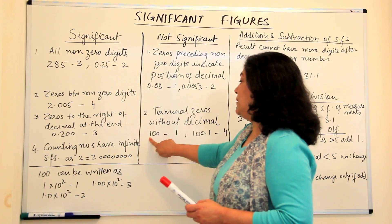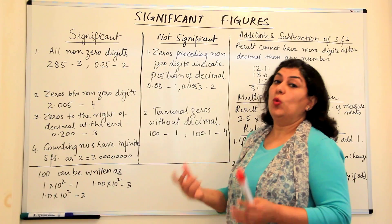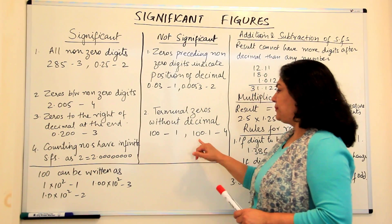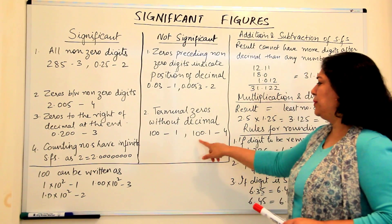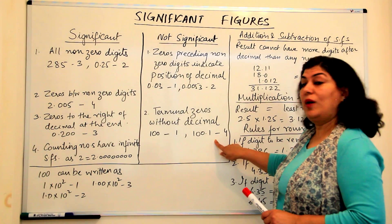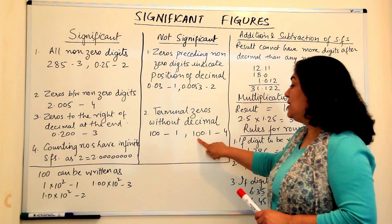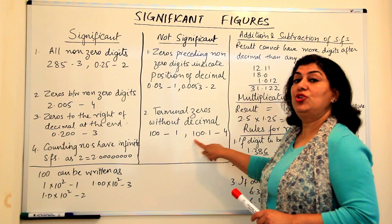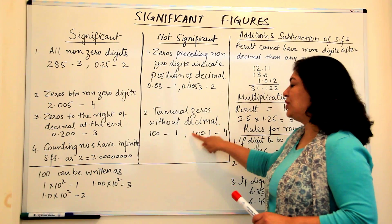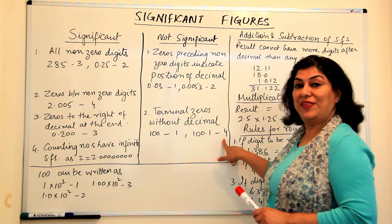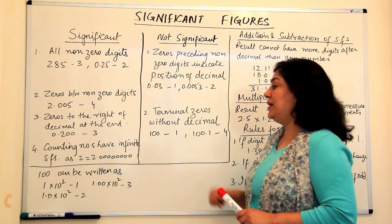So this one, 100, should have only one significant figure. I'm just taking this one example to explain that. 100.1 would mean that these zeros are between two non-zero digits and hence this one should have four significant figures. These zeros should be significant.